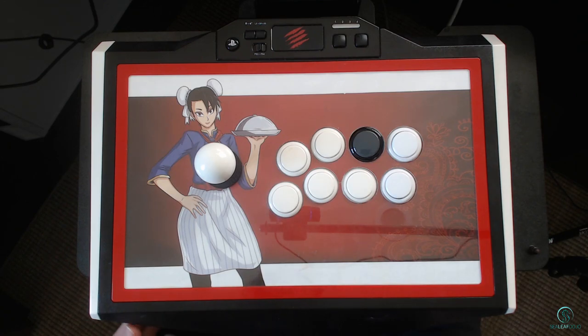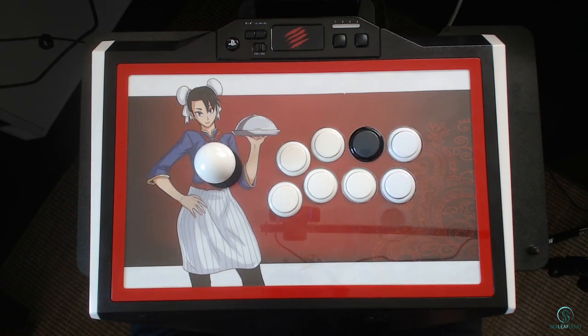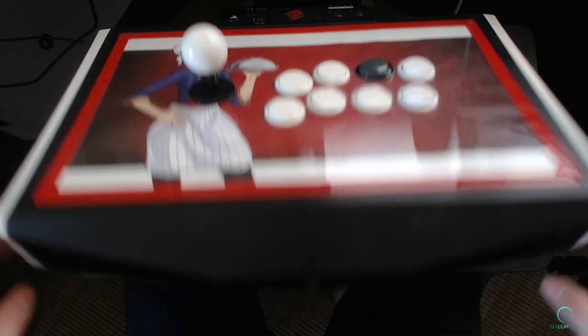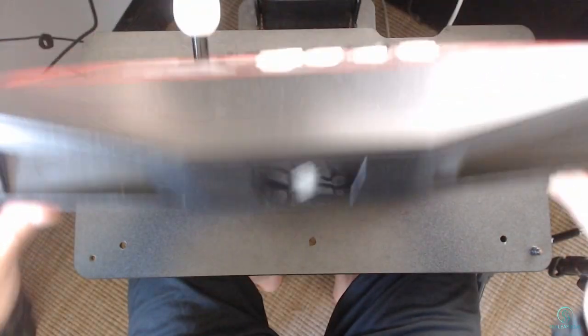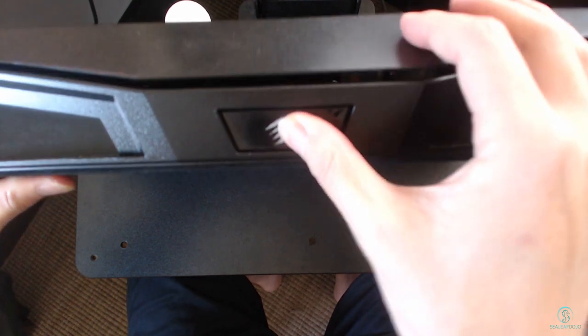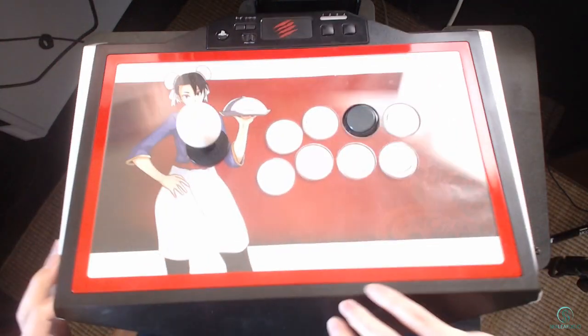Let's start with disassembling an existing arcade stick. I am going to use a Mad Catz TE2+, but other modern sticks should follow a similar method. First step is to open the case to gain access to the faceplate. The TE2 is very easy in this regard because it is accessible through a button.